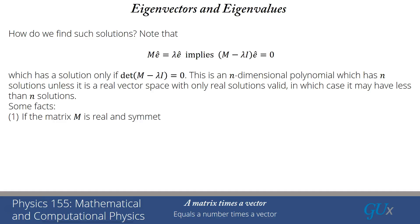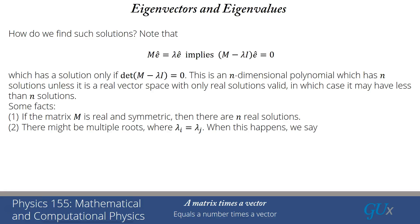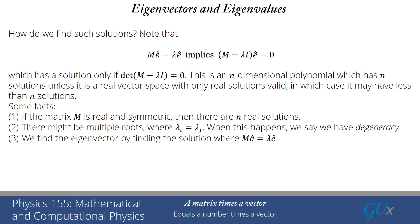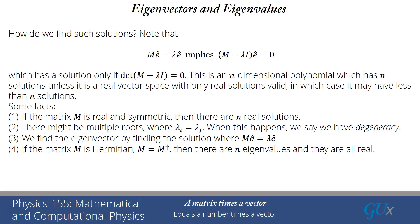If the matrix M is real and symmetric, then there are n real solutions — I'll take this as a fact, though a linear algebra course can prove it. There might also be multiple roots where lambda_i equals lambda_j for some i and j; when this happens, we say we have degeneracy, which is often related to extra symmetry in the problem. We find the eigenvector by solving M times Ê equals lambda times Ê, or equivalently (M minus lambda I) acting on Ê equals zero. If M is Hermitian — meaning M equals M-dagger (transpose plus complex conjugation) — then there are n eigenvalues and all are real. In particular, a real symmetric matrix is Hermitian.